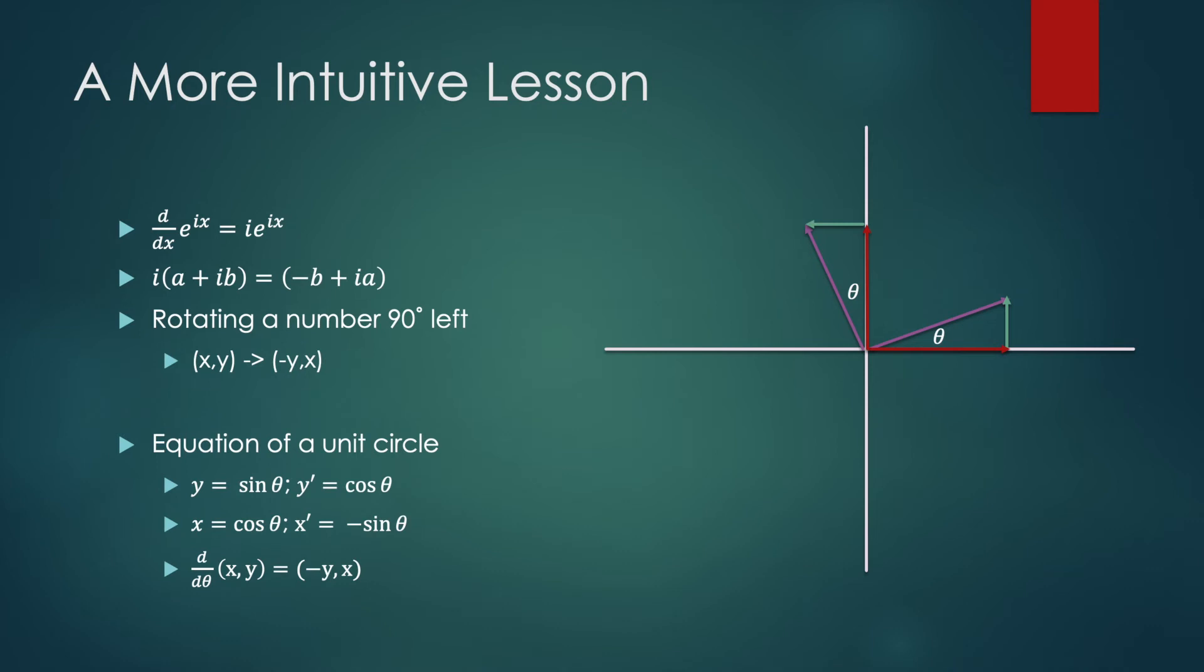y prime is cosine of the angle (the derivative of sin θ is cos θ), and x prime is minus sine of the angle (the derivative of cosine of θ is minus sin θ). In other words, your original function where y equals sin θ and x equals cos θ, the derivative of it is y prime equals x and x prime equals minus y. So if you take the derivative of a circle, you get a function that is 90 degrees rotated to the left of the circle.